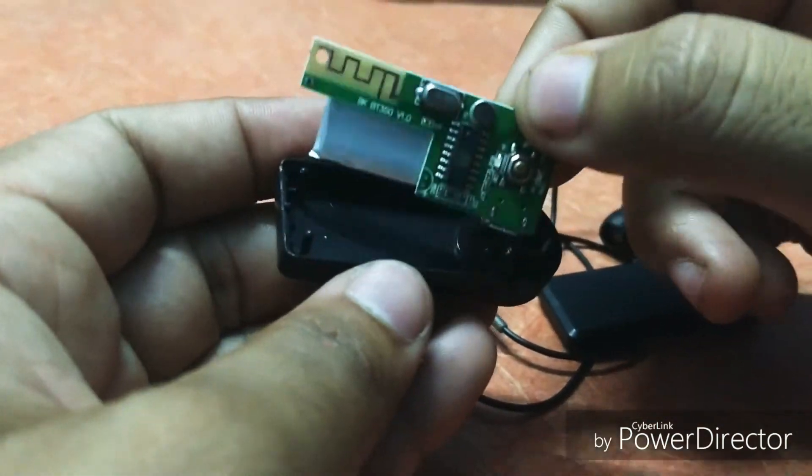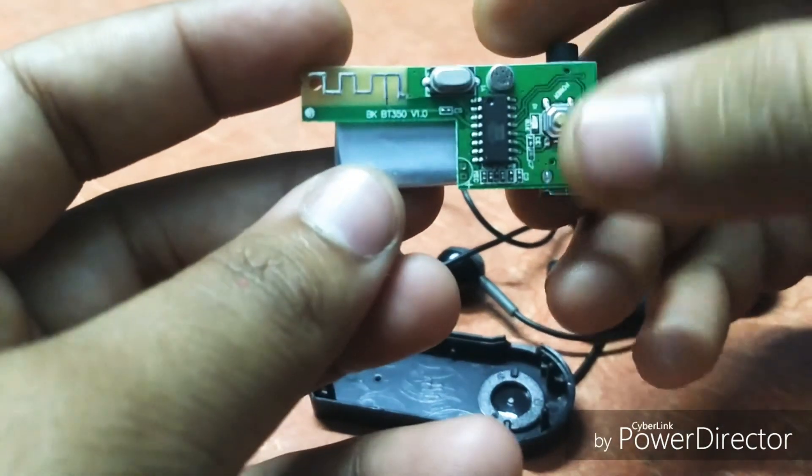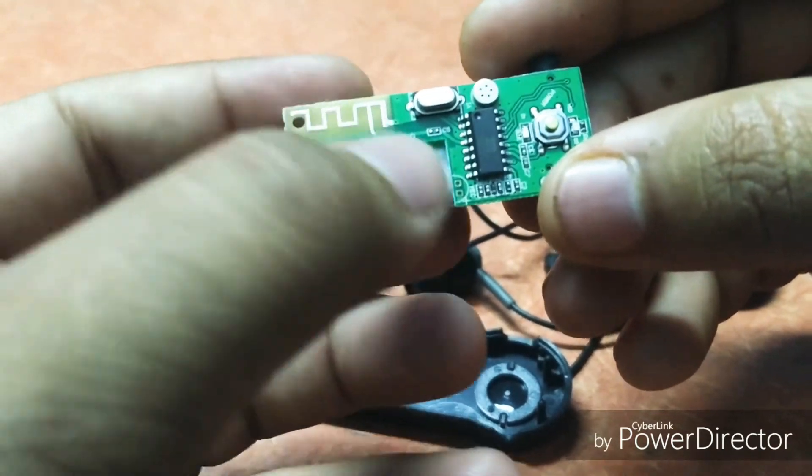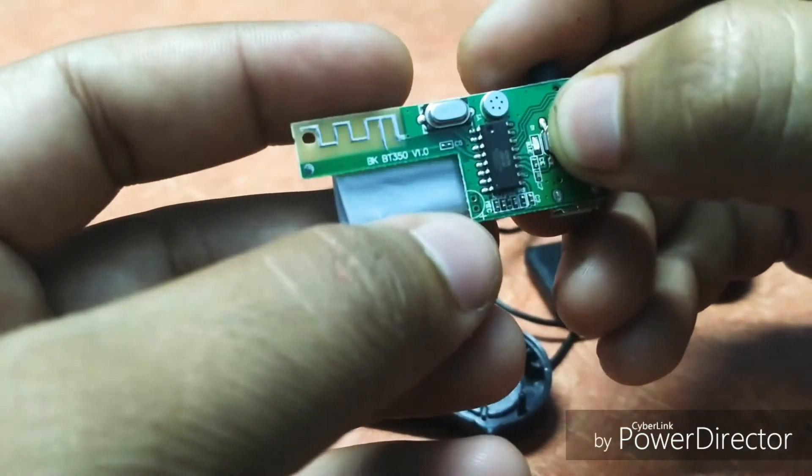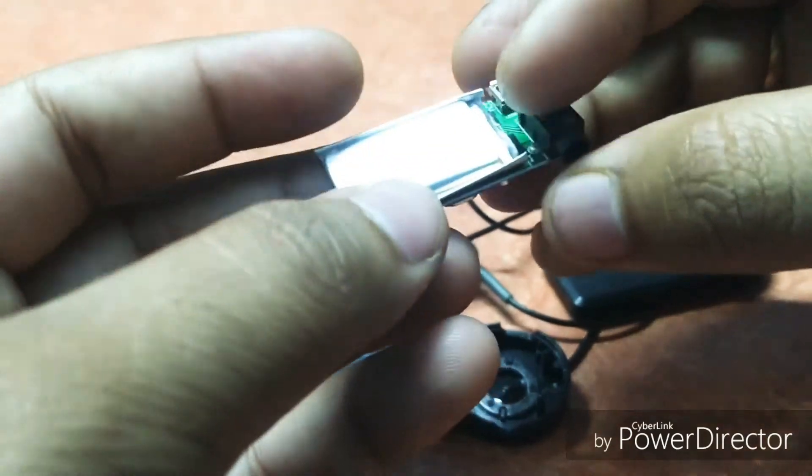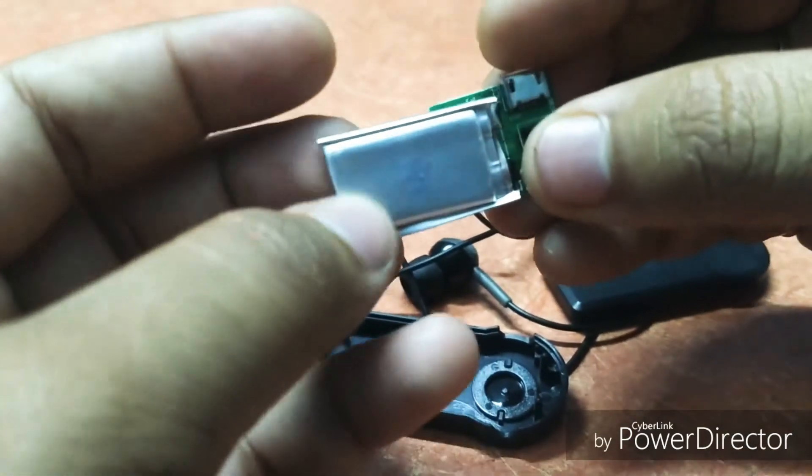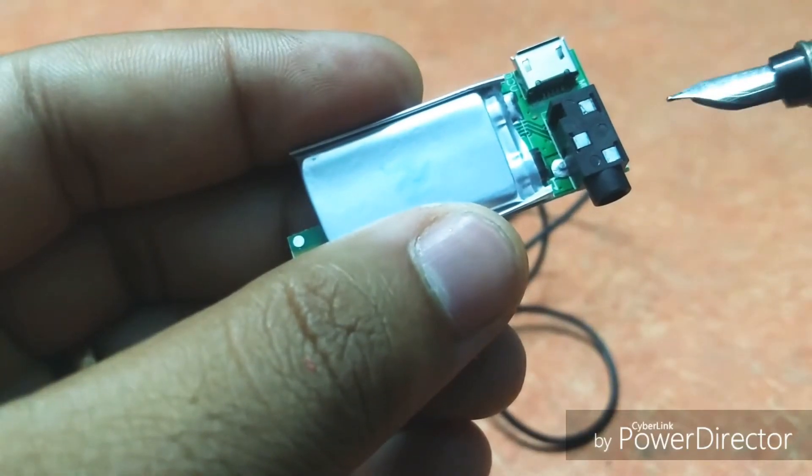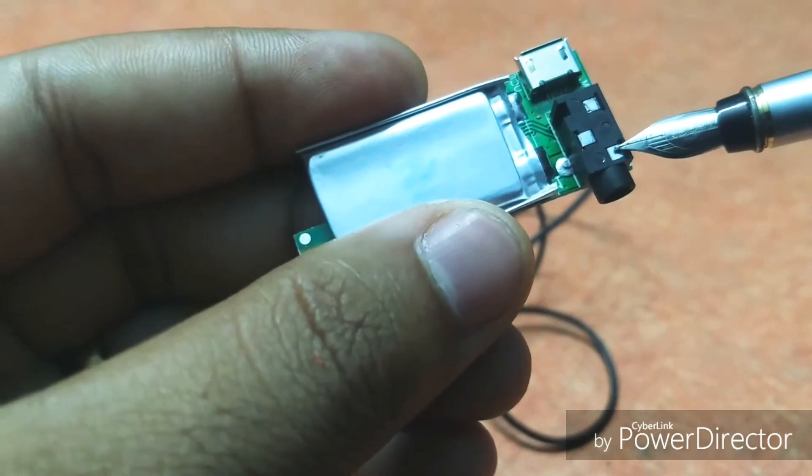This is the antenna, this is the power button, and this is the small battery which is used in this one. This is the 3.5mm jack where this point is the common, this is the right channel, and this is the left channel.